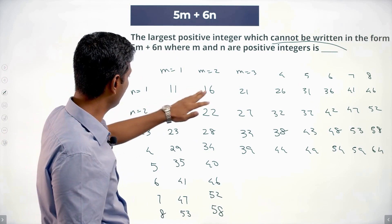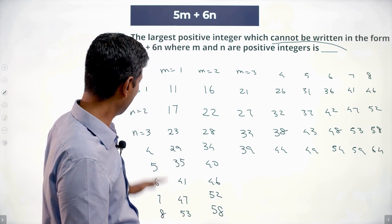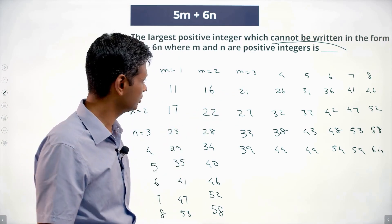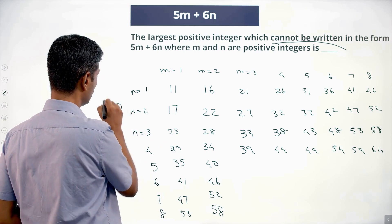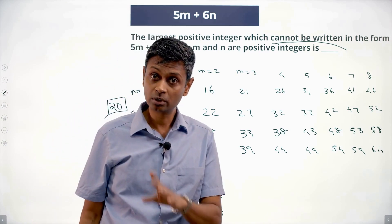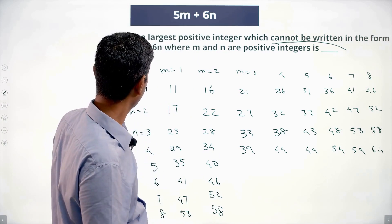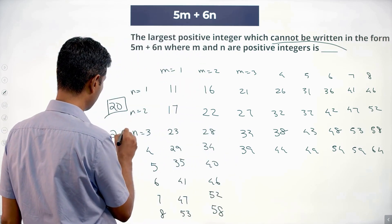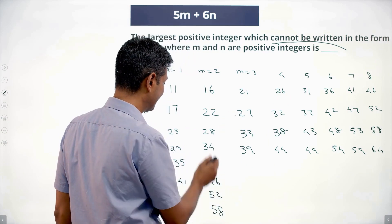Going back: after 11 we only have 16 and 17; numbers 12, 13, 14, 15 are not possible. Then 21, 22, 23 are possible but 20 is not — highest not possible so far is 20. Then 24 is not possible. What about 25? That's 5 times 5 but with no 6s — not valid since n must be positive. So 25 is also not possible. Highest not possible so far: 25.